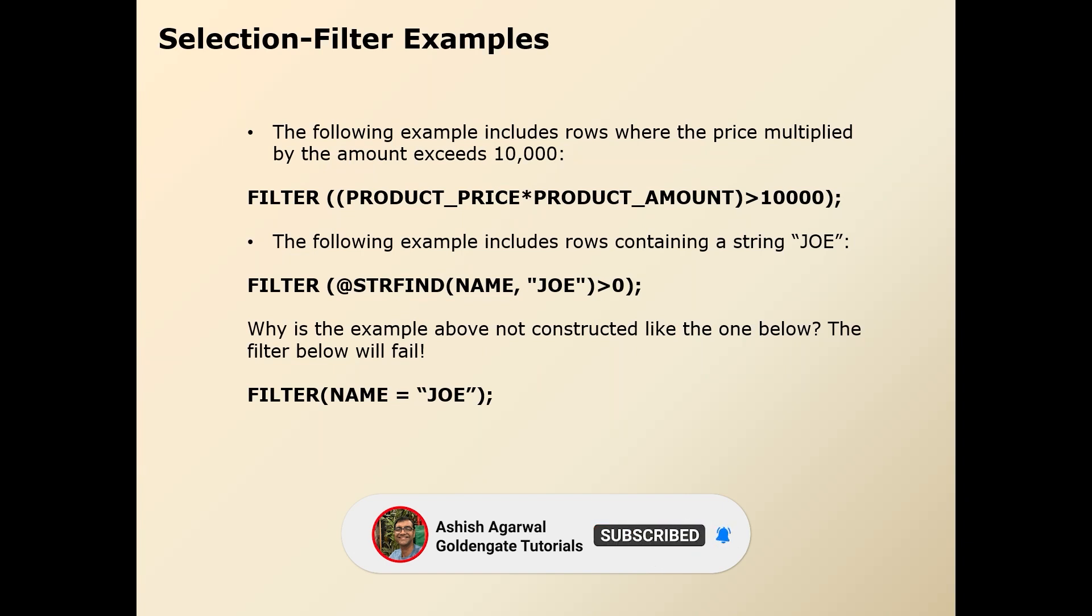So those are filter clauses, but one is using built-in function. Another one is not using built-in function. So what is the difference between the second filter statement and third filter statement? Can anyone tell me?